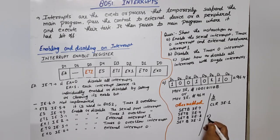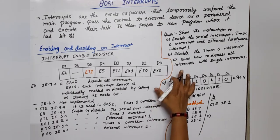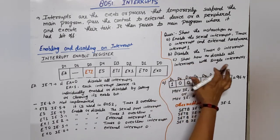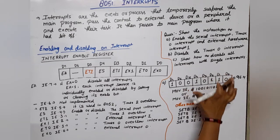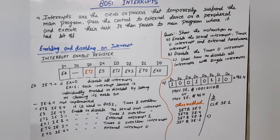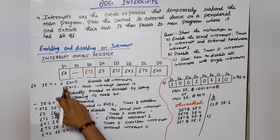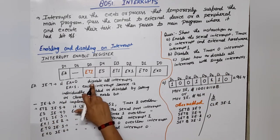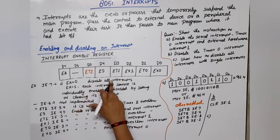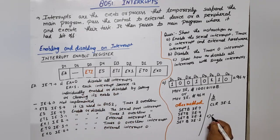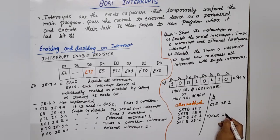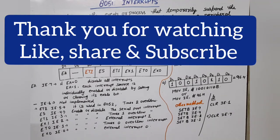Now, how do we disable all interrupts with a single instruction? If we clear EA (set EA=0), it disables all interrupts. So we simply write: CLR IE.7. That's it. Thank you so much. If you still have any doubt, please write it down in the comment section.